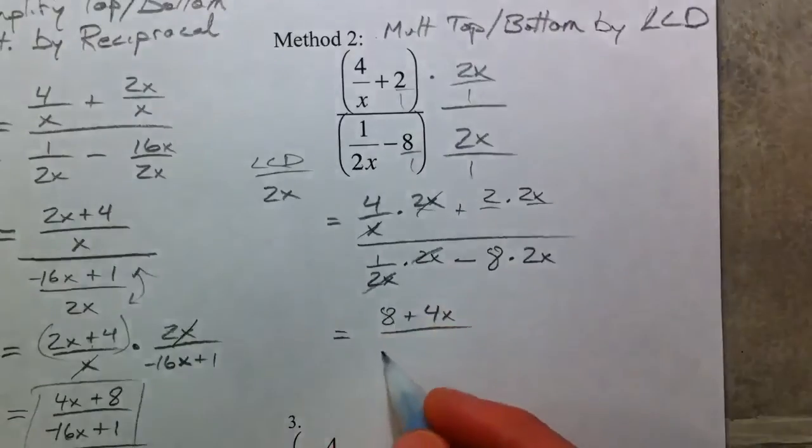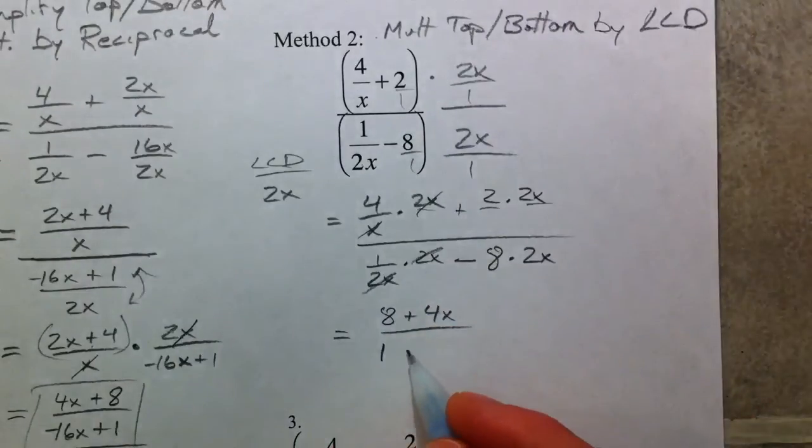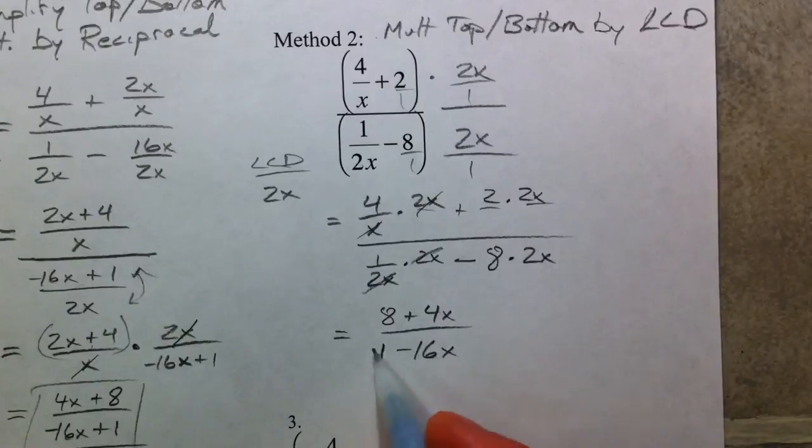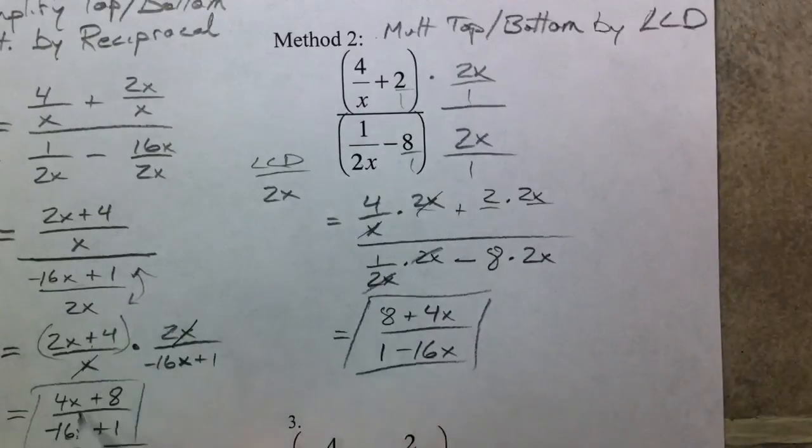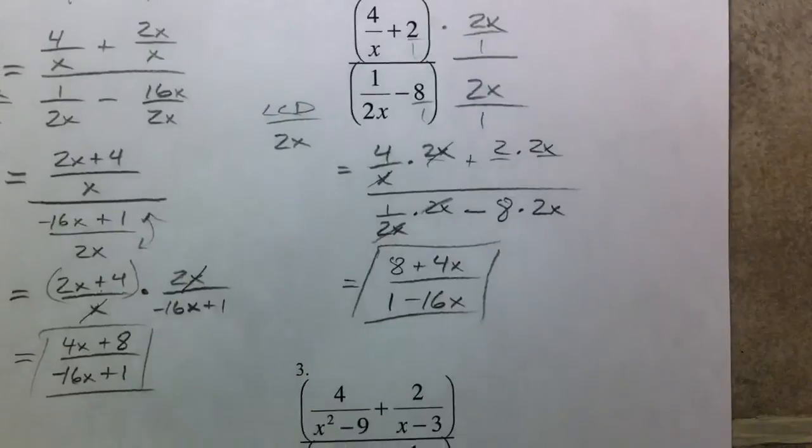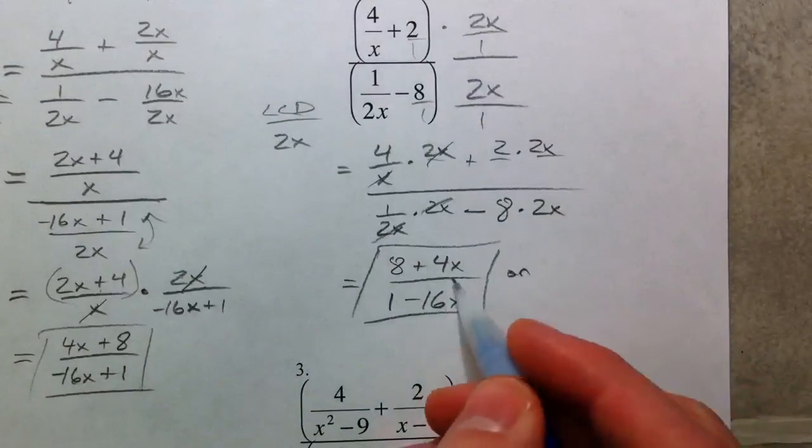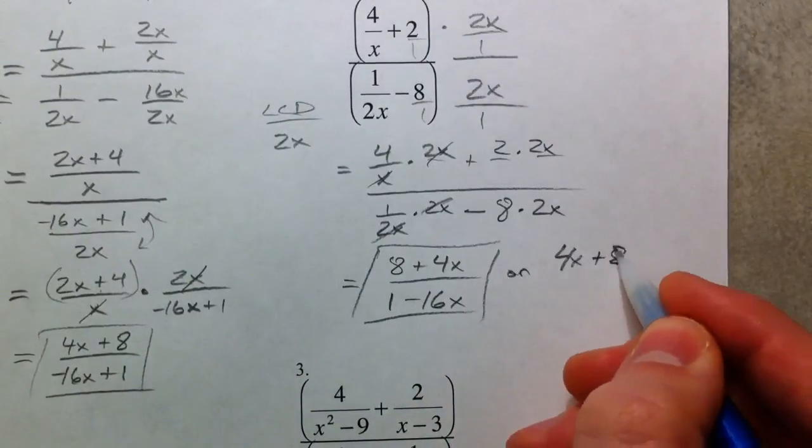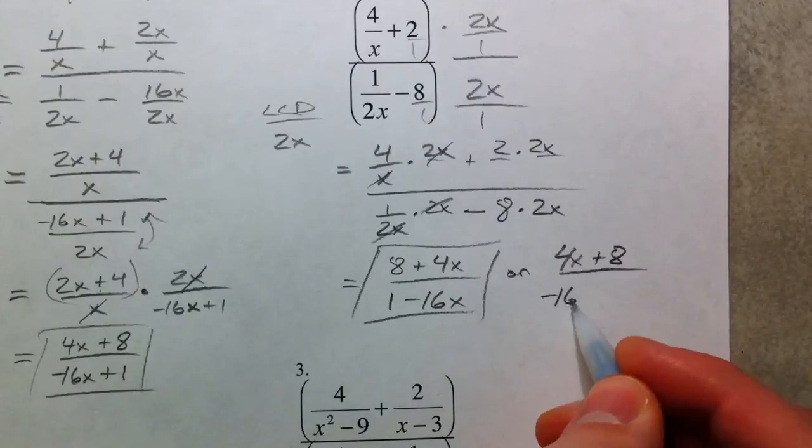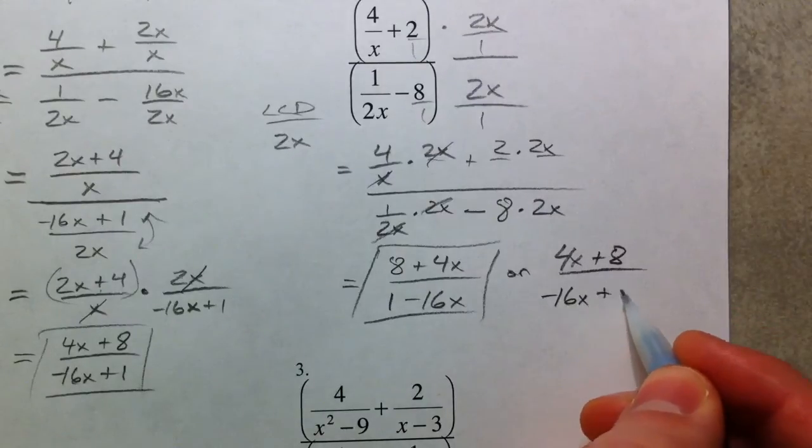2 times 2x is 4x. 2x and 2x cross out, leave 1. And negative 8 times 2x is negative 16x. And so it's equivalent to our other answer over here. And if you really want to see it, just flip over. We get 4x plus 8 over negative 16x plus 1.